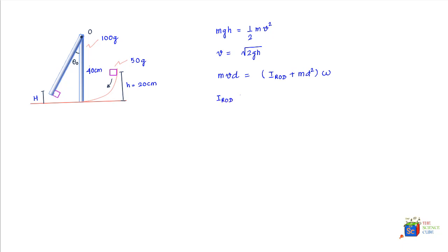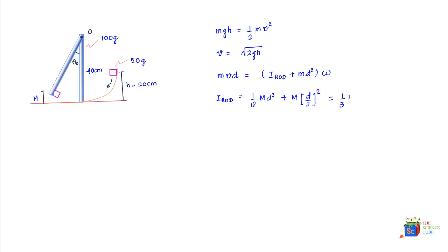The moment of inertia of the rod, I_rod, equals (1/12)Md² plus M·(d/2)², using the parallel axis theorem — we know the moment of inertia about the center and add the squared distance from the axis of rotation to the center of mass. Working this out, we find I_rod equals (1/3)Md².